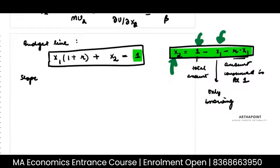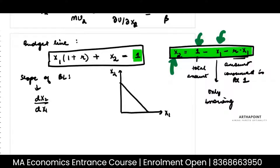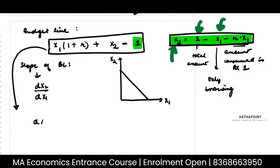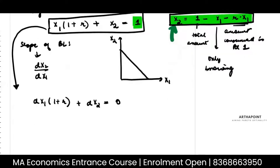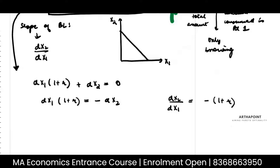Now, what is the slope of this budget line? I have X2 on the vertical axis and X1 on the horizontal axis. Differentiating the budget equation, I get DX1 times (1 plus R) plus DX2 equals 0, which gives DX2 upon DX1 equals minus (1 plus R). So in absolute terms, the slope of the budget line is 1 plus R.